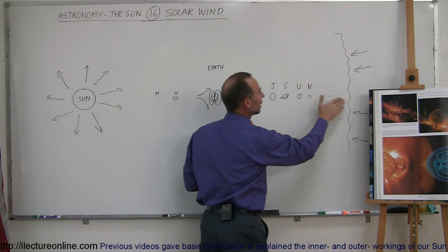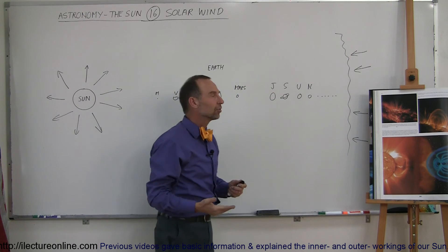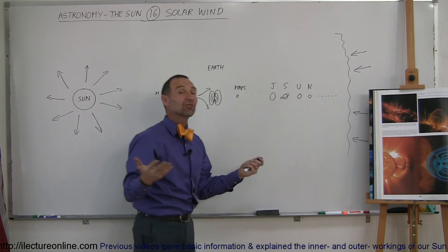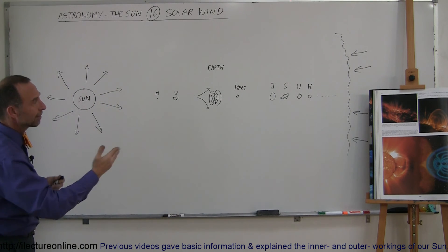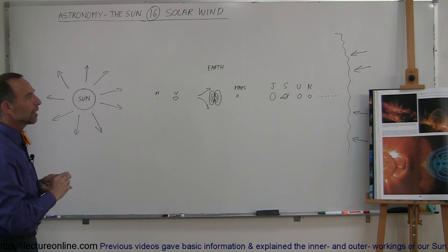So once you cross this boundary you're now in what we call interstellar space. When you reach this boundary, on the side of the boundary we can still potentially call that the solar system. So that's the edge of our solar system by the time the solar wind reaches that onslaught of radiation coming from outer space.